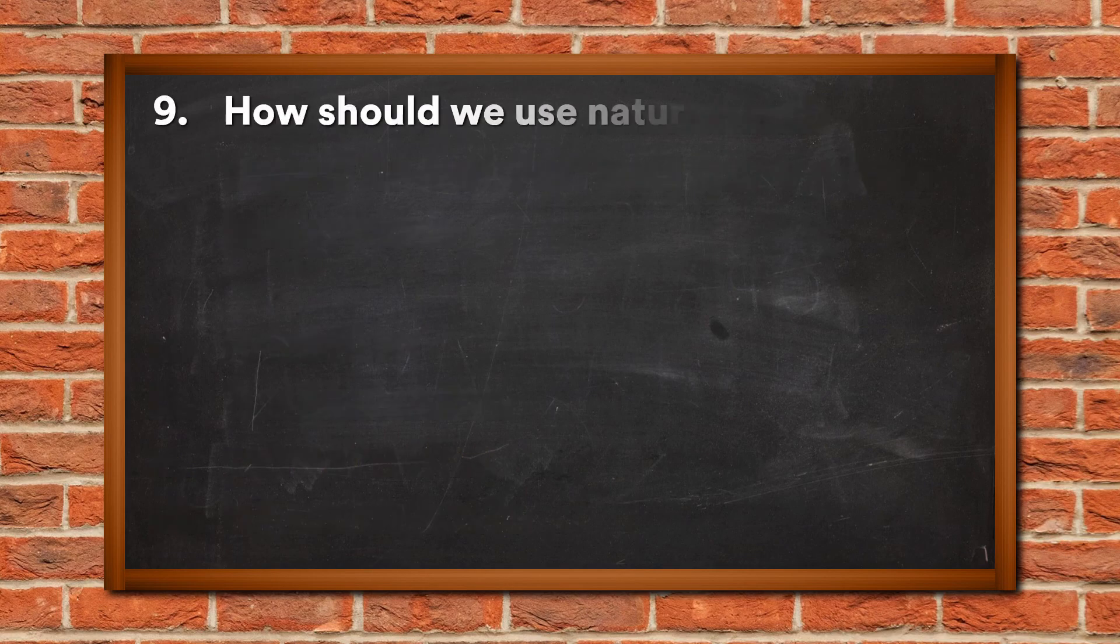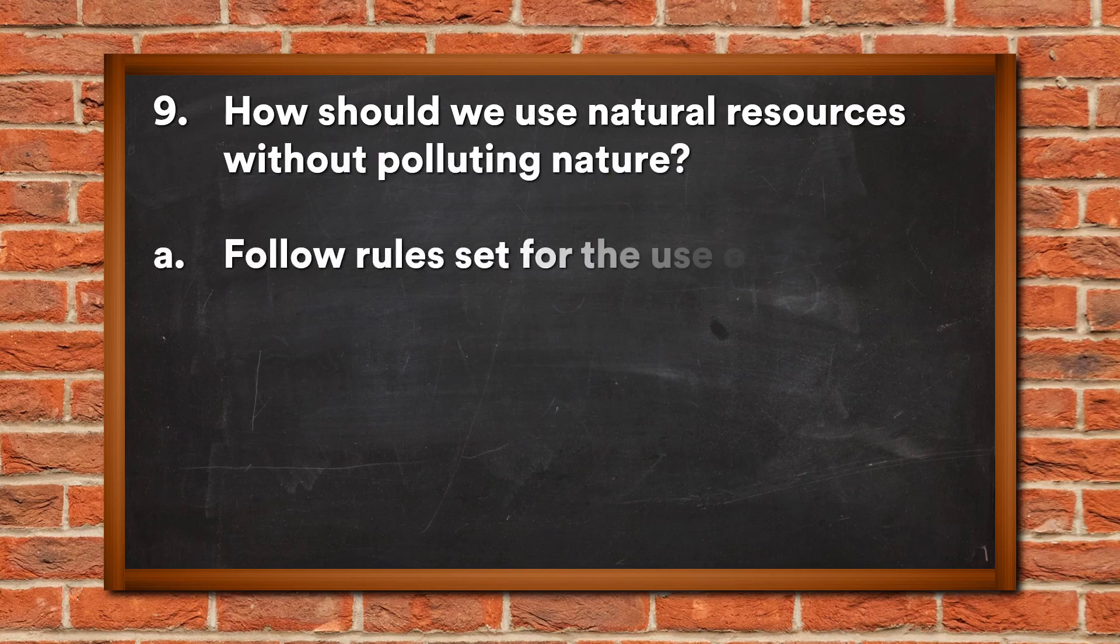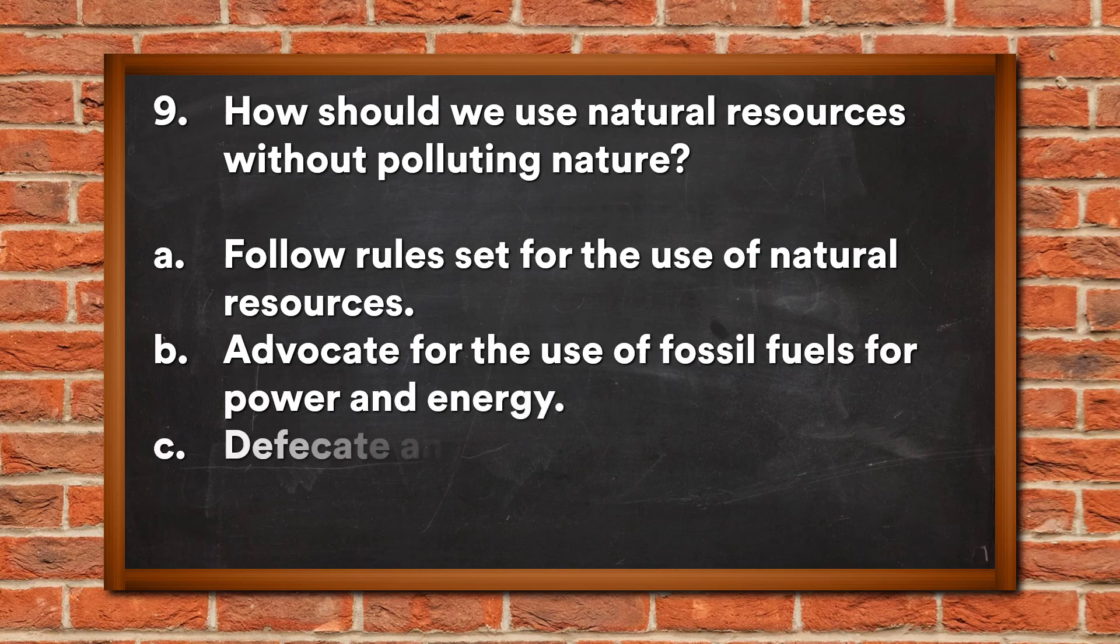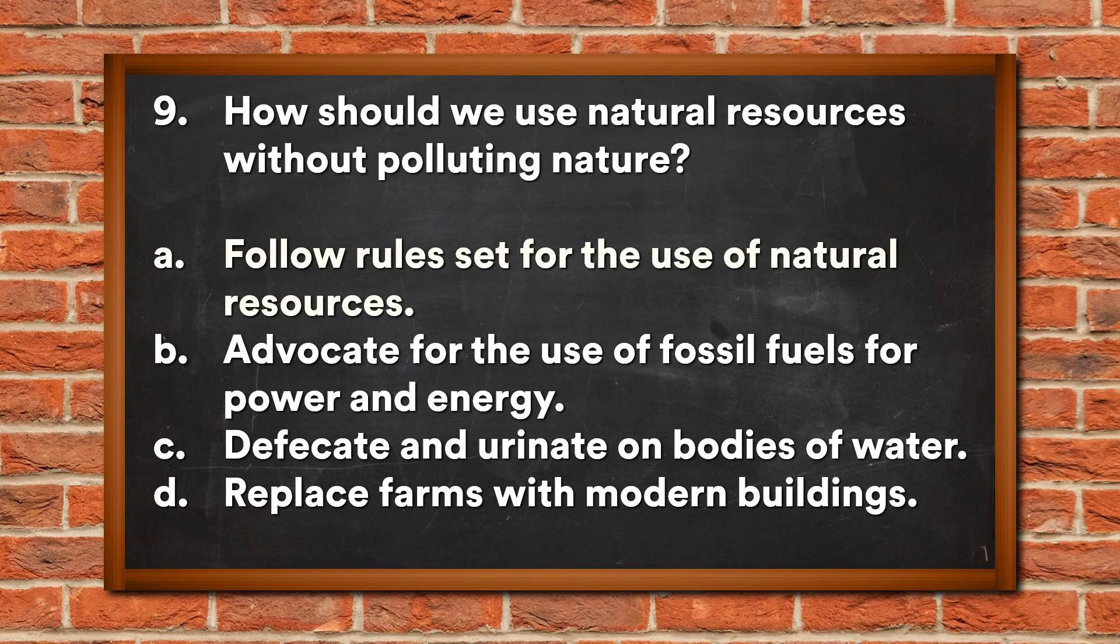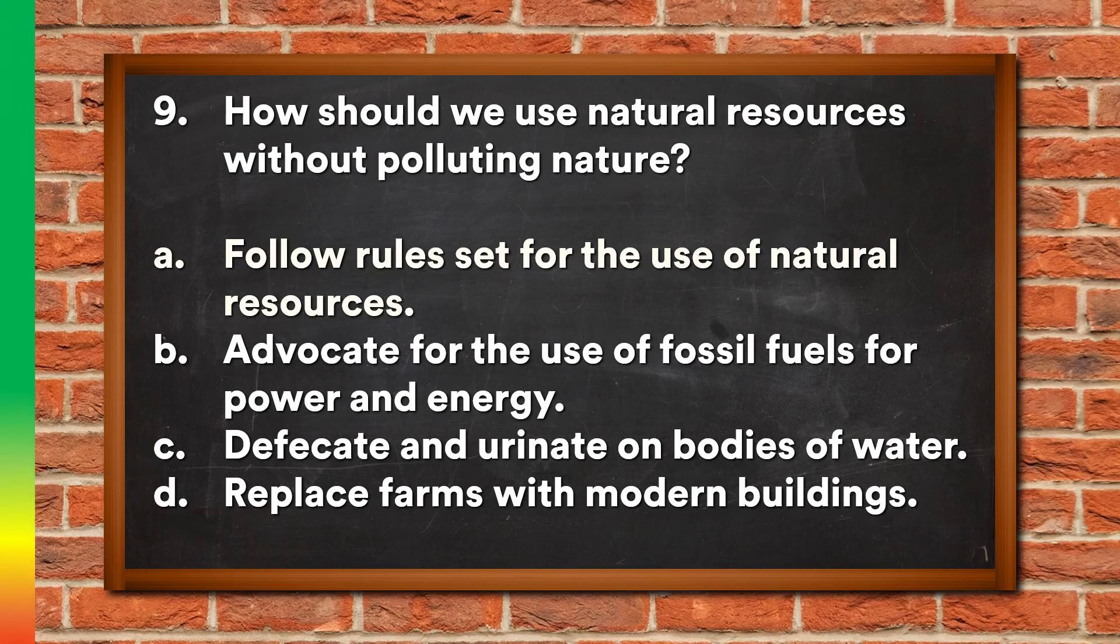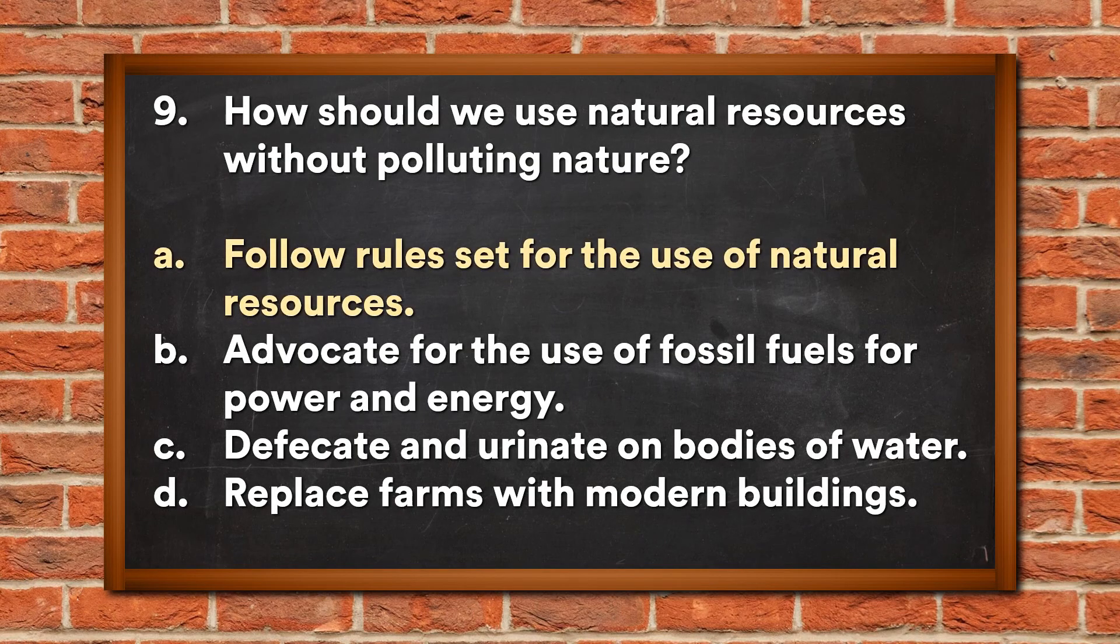Question 9: How should we use natural resources without polluting nature? A. Follow rules set for the use of natural resources, B. Advocate for the use of fossil fuels for power and energy, C. Defecate and urinate on bodies of water, D. Replace farms with modern buildings. The answer is A, Follow rules set for the use of natural resources.